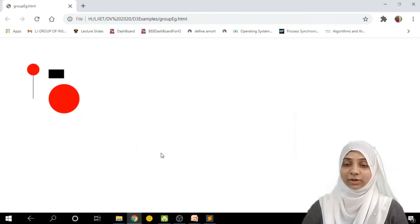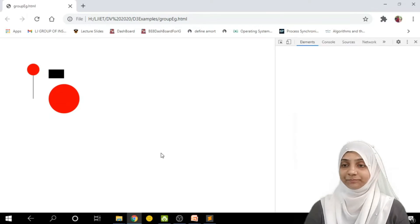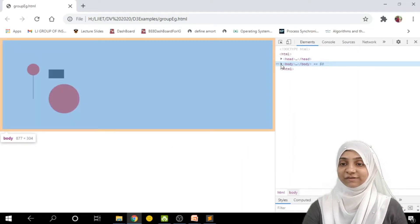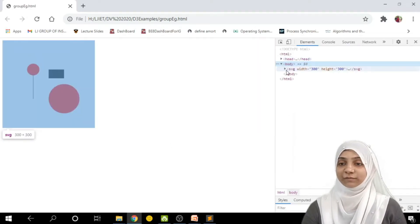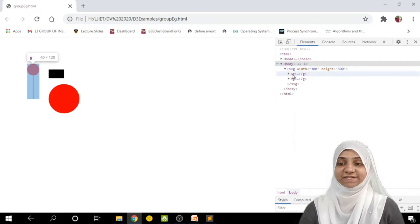I will just go to inspect window, that is ctrl shift i. Now, in elements tab, if I go within body, body is having two G tags.